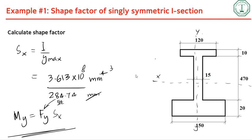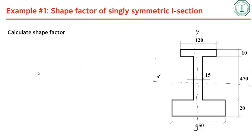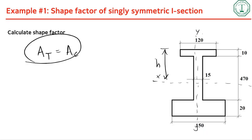The next step is to calculate the plastic section modulus. When the cross-section is fully yielded, the key condition is that the area in tension equals the area in compression. We use this to find the plastic neutral axis, calling its height from the bottom h.